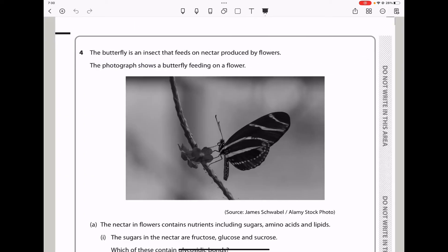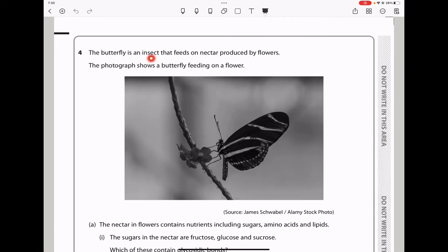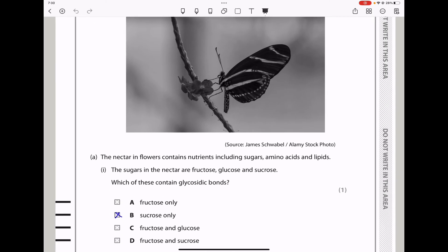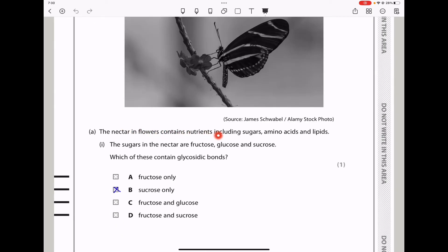Let's continue to question four. Question four: The butterfly is an insect that feeds on nectar produced by flowers. The photograph shows a butterfly feeding on a flower. The nectar in flowers contains nutrients including sugars, amino acids, and lipids. The sugars in the nectar are fructose, glucose, and sucrose. Which of these contains glycosidic bonds? Glycosidic bonds should not be in monosaccharides. So this is out and that is out. They should be at least in a disaccharide like sucrose. So the answer here among these three should be sucrose only.